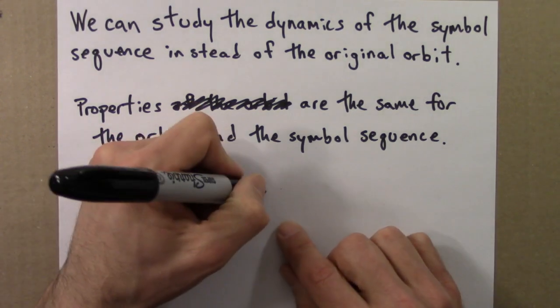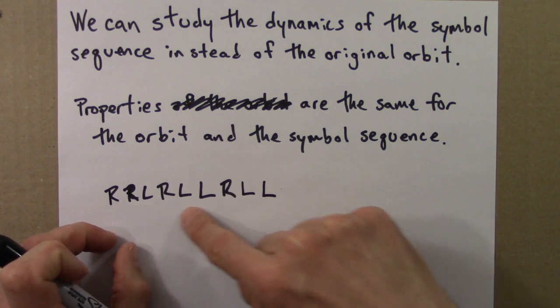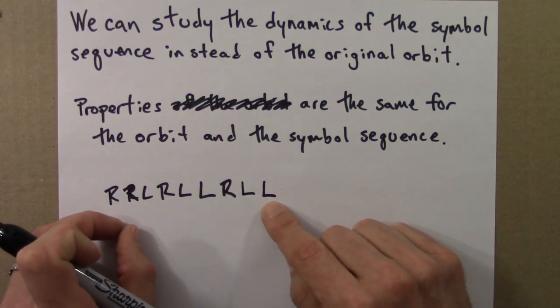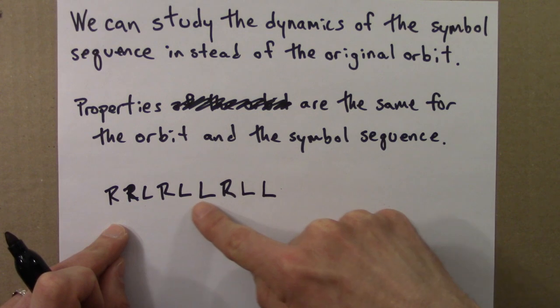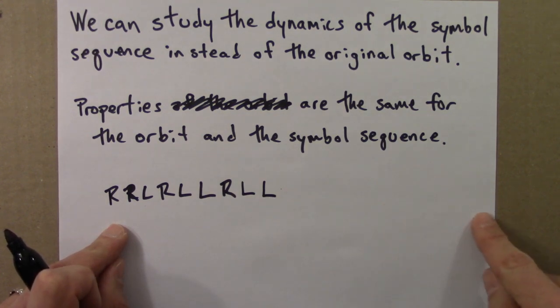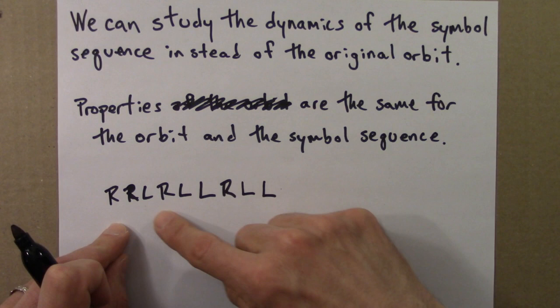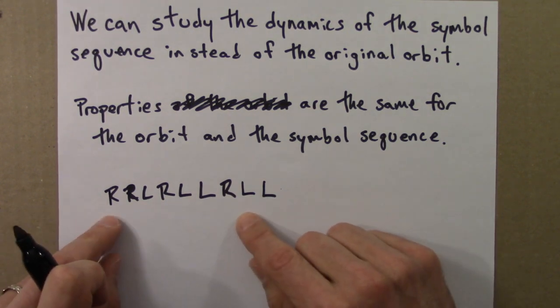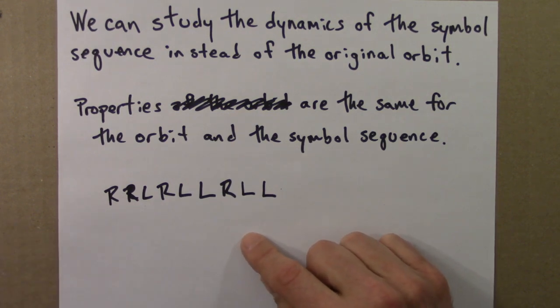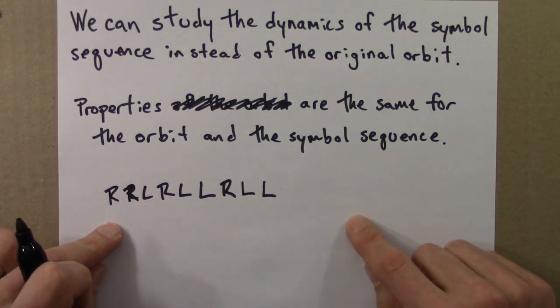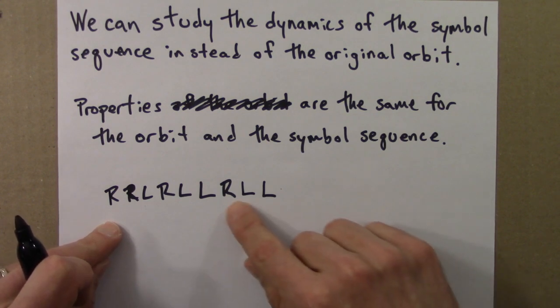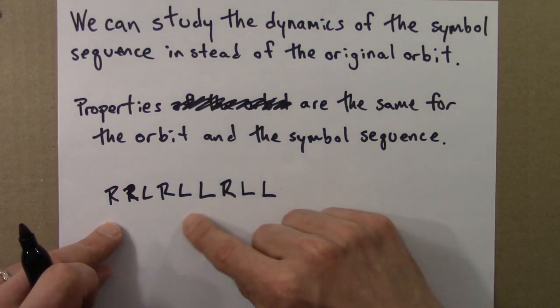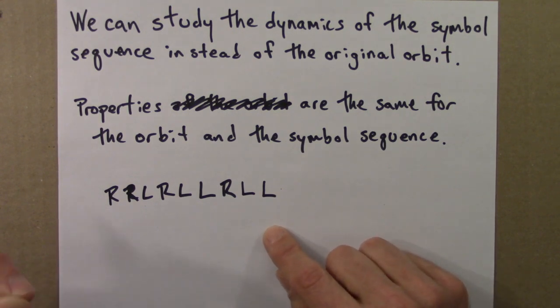And if I add another symbol, the possible initial conditions that give rise to this is smaller still. And so, in the limit that the symbol sequence becomes infinitely long, the possible initial conditions that would give rise to it become infinitely small. Another way to say this is that if you give me one single initial condition, the symbol sequence that results from that is unique. There's one and only one symbol sequence that results from that one single initial condition.